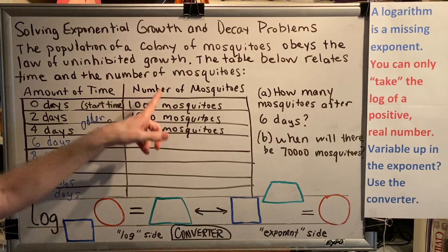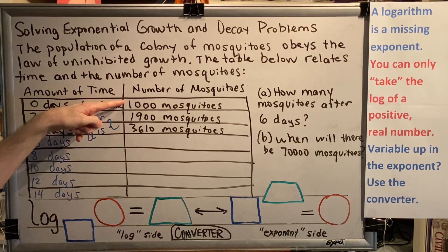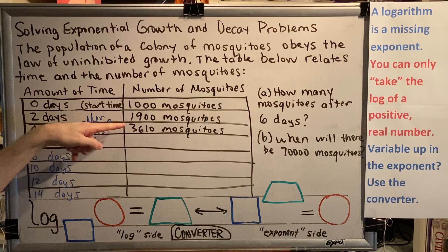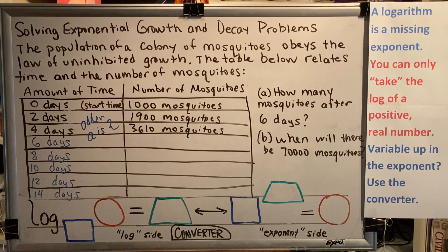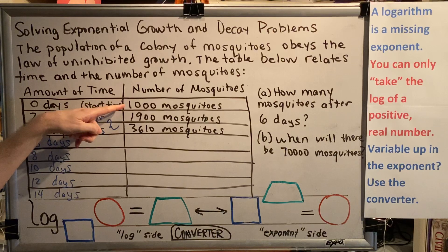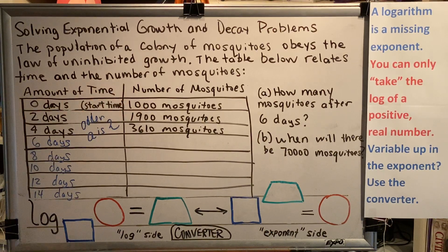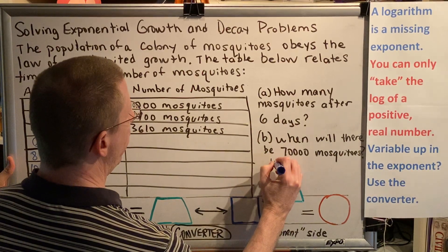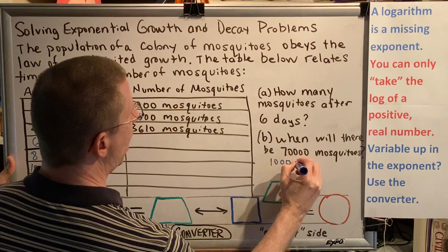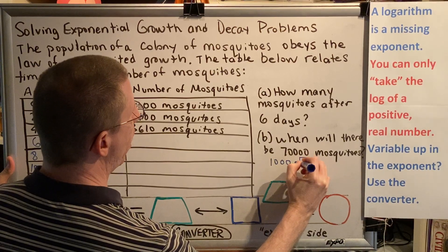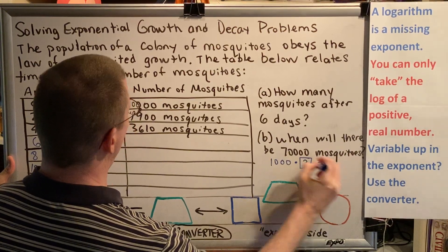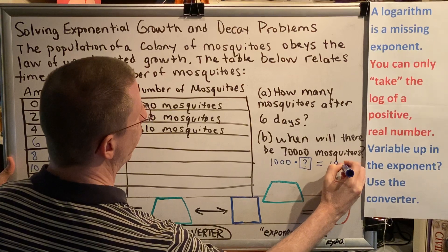Now when it comes to the mosquitoes, we can see that there is growth. We started with 1,000, then it grows to 1,900, then it grows to 3,610, and we're looking for some sort of a pattern. So 1,000 times what value will give us 1,900? You can think of that in an algebraic class: 1,000 times some unknown number is going to give us 1,900.